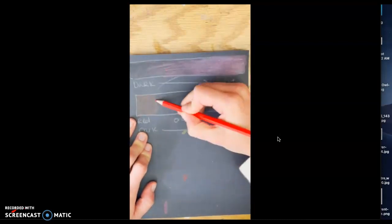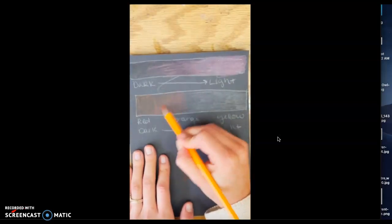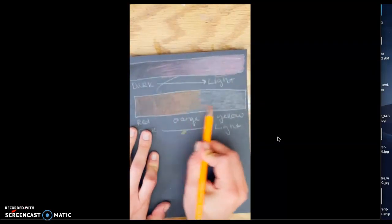Then I'm going to be fading the red into an orange and then into a yellow. Pick any three analogous colors you would like to use for this.